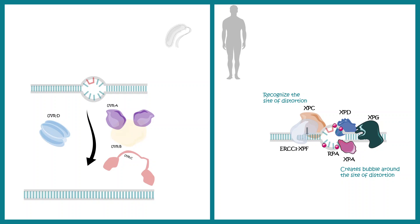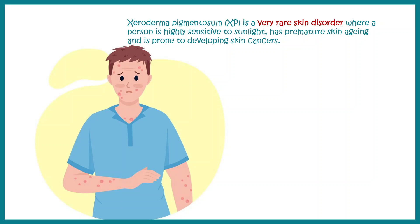The recognition, cleavage, and repair steps are conserved. Now, one human disease known as xeroderma pigmentosum is a very rare skin disorder where a person is highly sensitive to sunlight, especially UV radiation, and it can lead to cancer in these patients. It has been seen that the risk genes are XPA, XPC, XPD, and all of these genes are components of the nucleotide excision repair system.